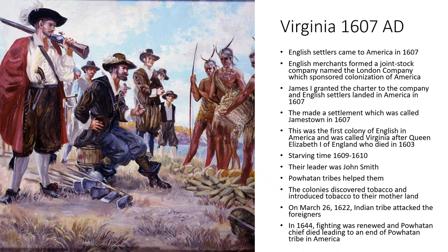Pocahontas — the Disney princess — was actually a real historical figure. She was from the Powhatan tribe and was the daughter of the Powhatan chief. She was a very kind lady who helped the foreign settlers. I studied about her in Robert W. Remini's 'A Short History of the USA.' I did not know she was a real figure until I studied American history. This concludes the story of Virginia and the arrival of the British in America in 1607.